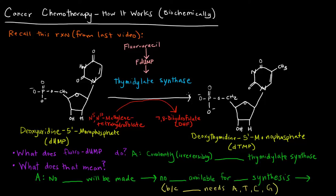This reaction is the target of a cancer chemotherapy drug called fluorouracil, which can be converted into FdUMP — fluorodeoxyuridine monophosphate. FdUMP covalently and irreversibly inhibits thymidylate synthase, thereby stopping this reaction from occurring.